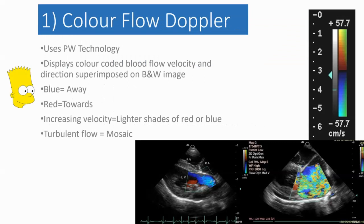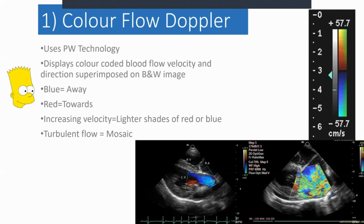Colour flow Doppler uses pulse wave technology and displays colour-coded blood flow velocity and direction, superimposed onto your black and white image. The easy way to remember this is BART — blue is away and red is towards. Whenever you press the colour flow button, a chart appears on the side showing that anything going away from the probe is blue, and blood flowing towards the probe is red. At higher velocities, the shades get brighter. Turbulent flow tends to be in a mosaic pattern, whereas laminar flow tends to be all the same sort of colour.